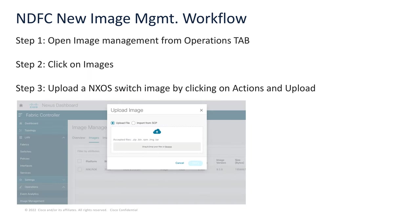We also have live installation logs to monitor each operation, along with image policy compliance. So let's look at it. What are the different steps when we want to either upgrade or downgrade a switch? The first step is to go into image management in the operations tab — go into operations, click on image management, click on images, and then upload a file or use import from SCP to put your NXOS switch image into NDFC.